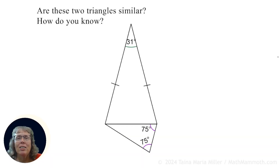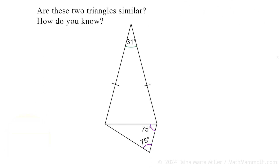Now let's use that to check: are these two triangles similar? We're given some of the angles here. There are also little tick marks through the sides — what does that signify? It signifies that those two sides are congruent, the same length. So if these two sides are congruent, then this is an isosceles triangle. And in an isosceles triangle, the base angles are congruent — these two angles are the same measure.